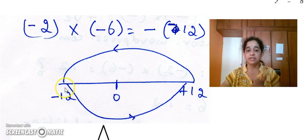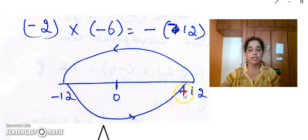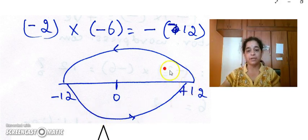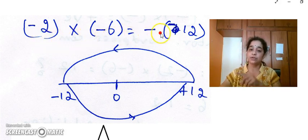So the same case, we have to apply for 12 also. So when minus 12 is negated, we take the opposite sign of minus 12, it goes to plus 12. So in this case, minus 2 into minus 6 will give you minus of minus 12, that is plus 12.